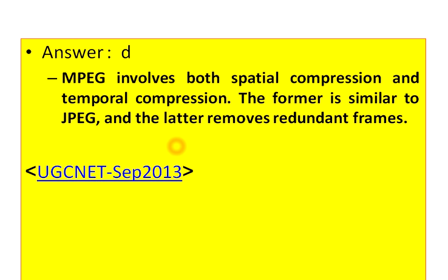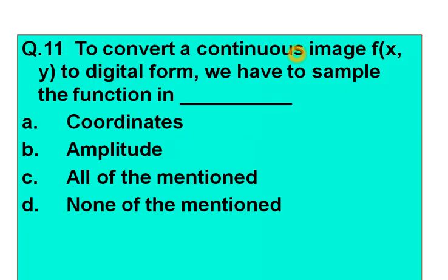Question number 11: To convert a continuous image f(x,y) to digital form, we have to sample the function in — Option A: coordinates. Option B: amplitude. Option C: all of the above. Option D: none of the above. The correct answer is option C — both coordinates and amplitude are required.